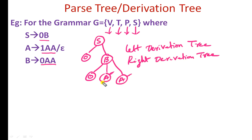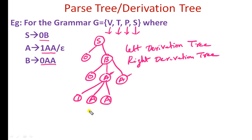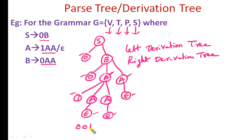Following the left derivation: A generates 1AA. For this A we may generate epsilon, and for the other A also we replace with epsilon. The string generated is 0, 0, 1, epsilon, epsilon, epsilon — which is equivalent to 001, because epsilon represents the null string.